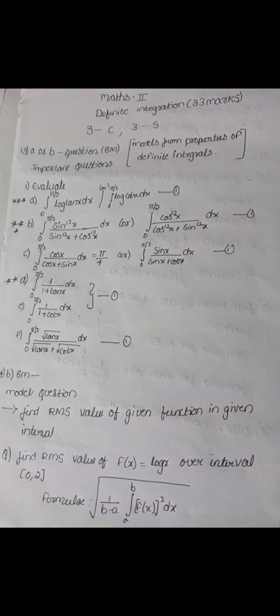In 14B, you will find the RMS value. The function f(x) has limits like 0 to 1, 0 to pi by 2, 0 to 2. The formula is: root over 1 by (b minus a) times integral a to b of f(x) whole square dx. Example: find the RMS value of f(x) = log x over interval 0 to 2. Substitute f(x) = log x, so you compute log x whole square. With a = 0 and b = 2, you find the answer. This is an 8-mark question.